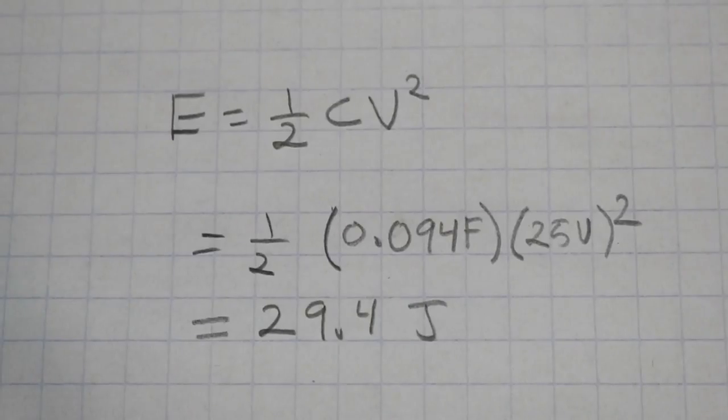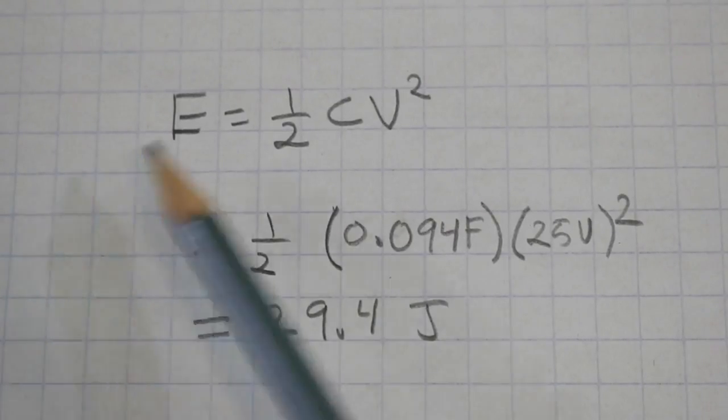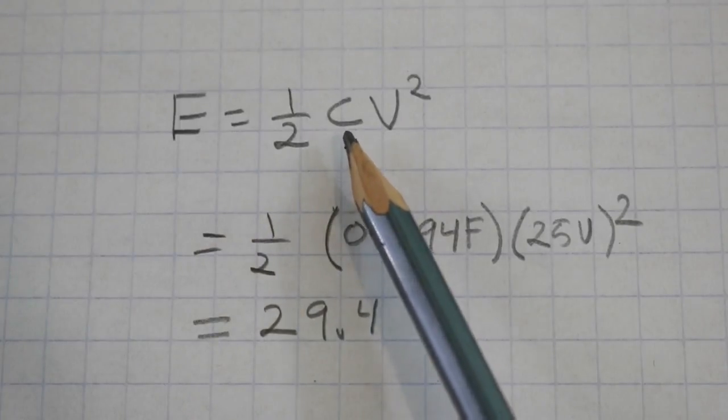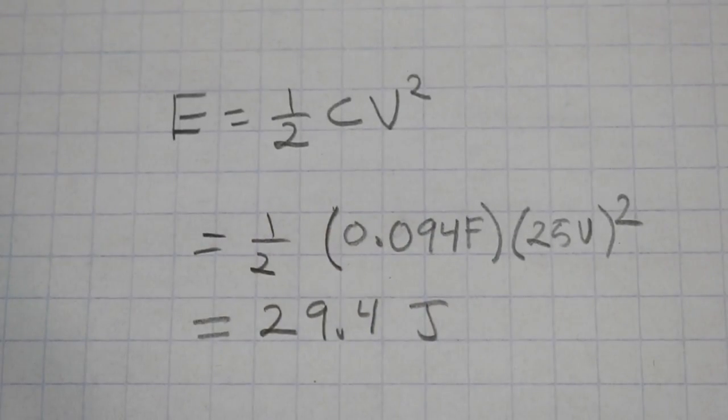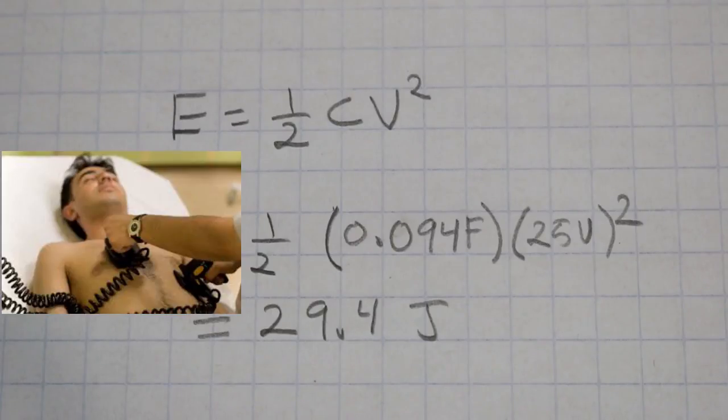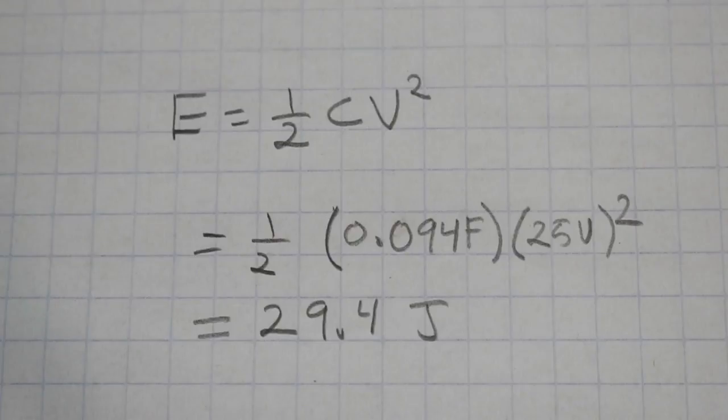The total energy of the capacitor bank can be calculated with this formula, one half of the capacitance times voltage squared. In our case, we have a capacitance of 94,000 microfarads, which is 0.094 farads. And the maximum voltage that our capacitor bank can resist is 25 volts. This will give a total energy of 29.4 joules. In order to give you an idea of this energy level, cardiac defibrillators use energy levels on the order of 200 joules.